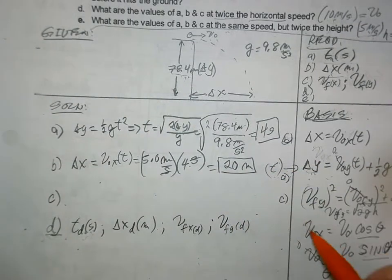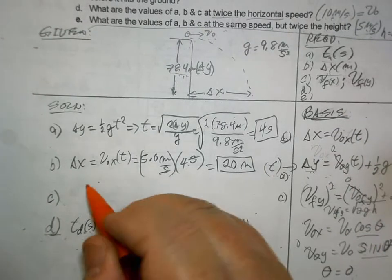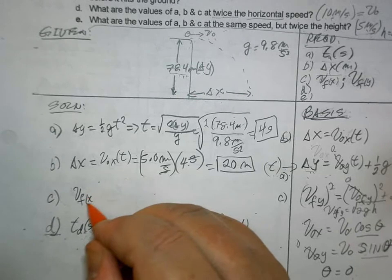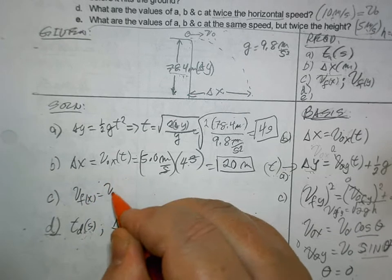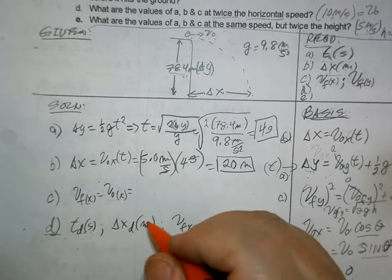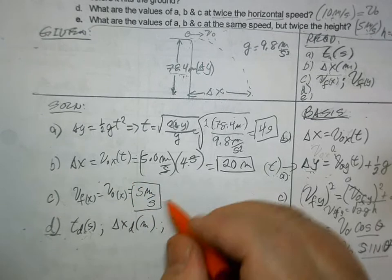And then what's the next one? This, right? The final velocity of o. Final velocity of x is equal to the initial velocity of x because it doesn't change. So this is 5 meters per second. And that's the solution.